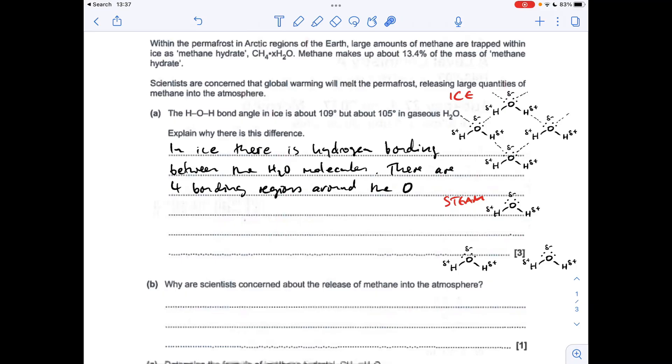So the repulsion of the lone pairs is stronger than the repulsion between the bonding regions and that drops the angle down a little bit. So in the question it's gone from 109 to 105 degrees. That's why you've got that different angle in the gaseous H2O.